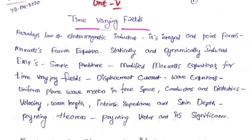Good morning everyone. Today we are going to discuss time varying fields, Unit 5 of the subject Electromagnetic Fields for EC III. The syllabus covers Faraday's laws of electromagnetic induction, its integral and point forms, and Maxwell's fourth equation regarding time varying magnetic fields.